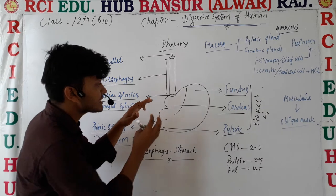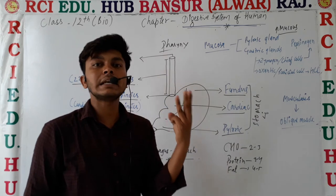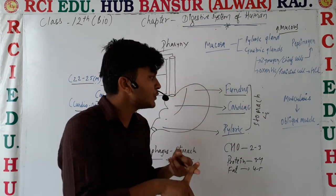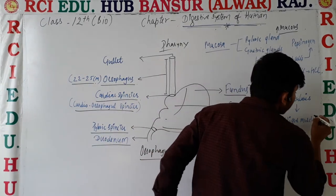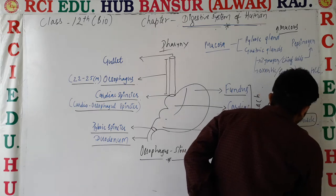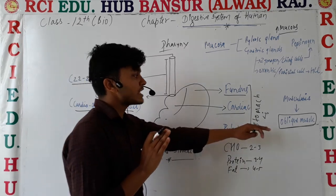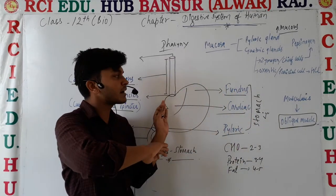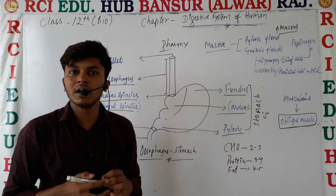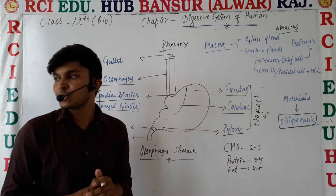In the stomach, the second layer is the muscularis. In most of the alimentary canal, the muscularis has two layers — circular muscle and longitudinal muscle. But in the stomach, the muscularis has an additional layer, that is the oblique muscle. So the stomach has three muscular layers: circular, longitudinal, and oblique.